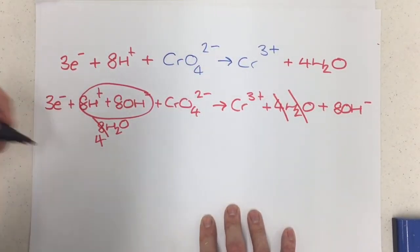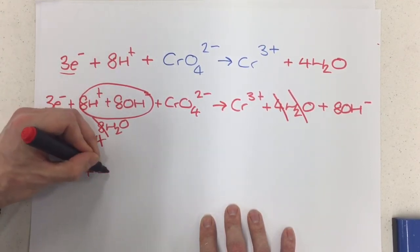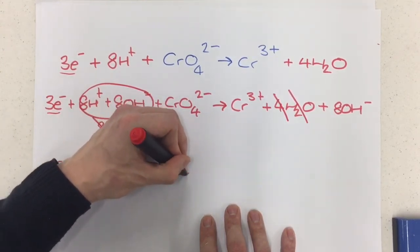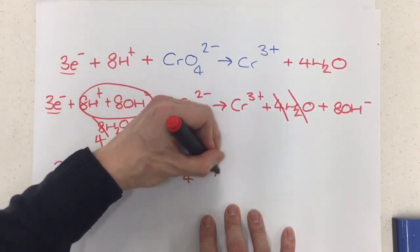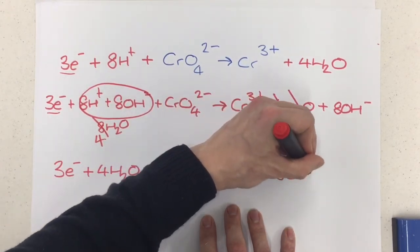And so my overall equation, well, the overall of this half equation, remember, because it still shows the electrons, I'm not getting rid of those, is going to be at the end, 3e- plus 4H2O plus CrO4^2-, which reacts to form chromium 3+ and 8OH-. I'm just going to double-check it, and yep, everything's absolutely perfect for that.